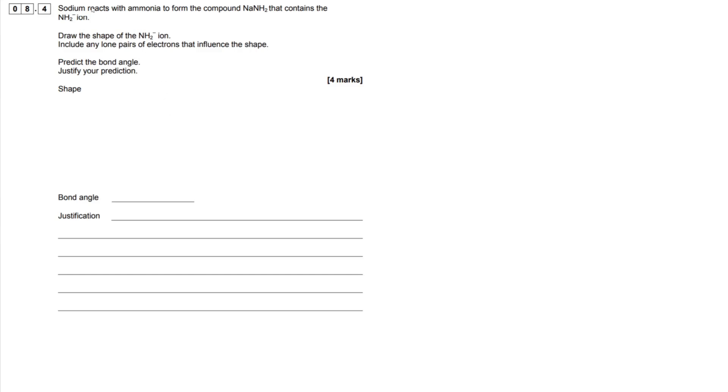So sodium reacts with ammonia to form this compound NaNH2, and this contains the NH2 minus ion. We have to draw the shape of this guy right here, and we have to include any lone pairs of electrons that influence the shape. We have to predict the bond angle and justify our prediction here.